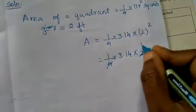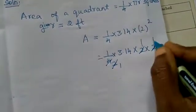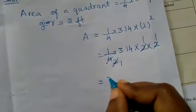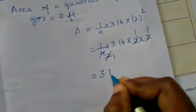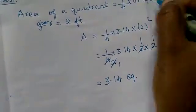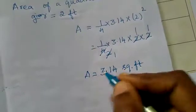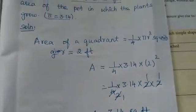Now 1 times 2 is 2. 2 times 2 is 4. Again, 1 times 2 is 2. So what is the answer? Easy calculation: 3.14 square feet. Square what is the unit? Feet. Square feet. This is the area of the quadrant. Simple question.